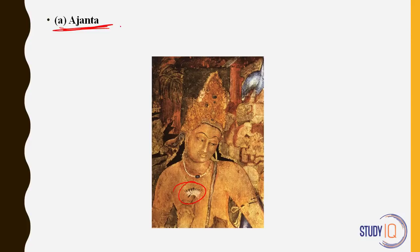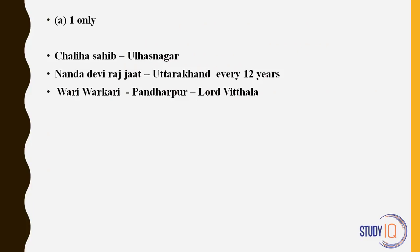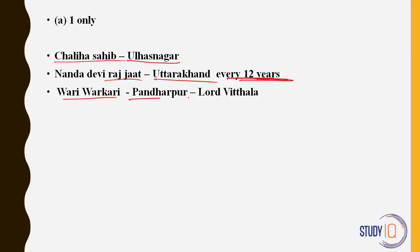Again from culture: traditions of different communities — Chaliyah Sahib associated with Sindhi, Nanda Raj Jat Yatra with Gond, and Vari Varkari with Santhal — which is correct? The answer was one only. Chaliyah Sahib is a festival celebrated in Ulhasnagar, near Mumbai, a township with many Sindhi people who migrated from Sindh after partition. Nanda Devi Raj Jatra is held once every 12 years in Uttarakhand — remember Nanda Devi Biosphere Reserve and National Park. Vari Varkari is a pilgrimage in Pandharpur, Maharashtra, where there is a temple of Lord Vithal, an avatar of Lord Vishnu. It is not associated with Gond or Santhal. So the answer was A, one only.